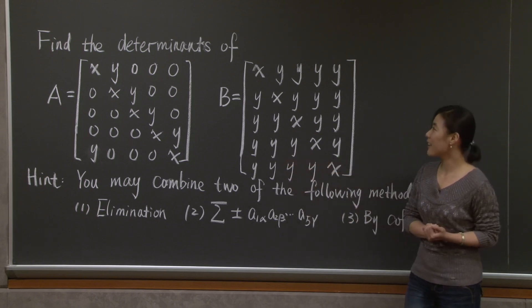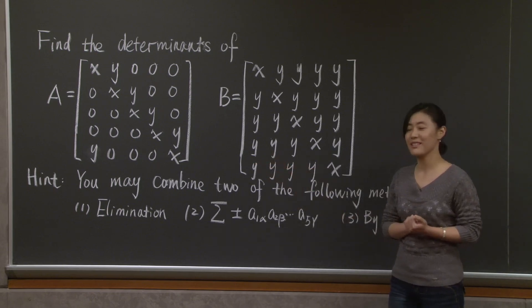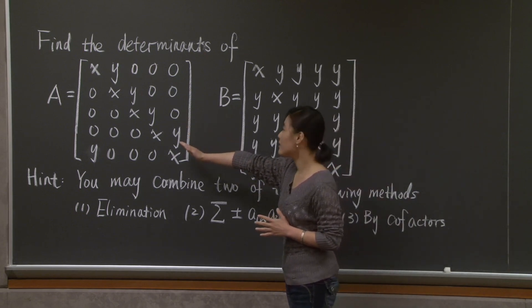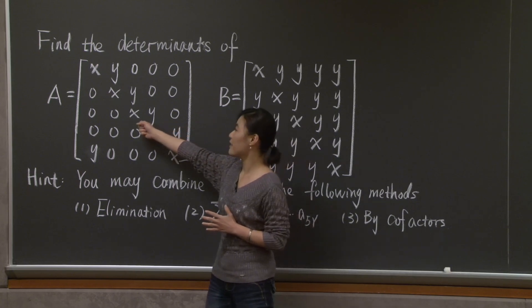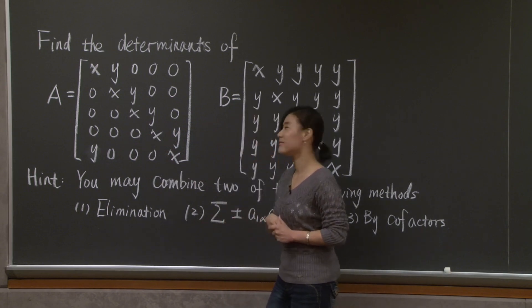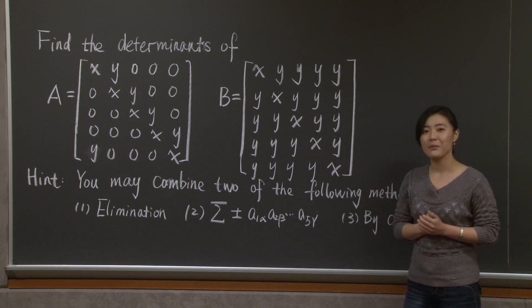So we want to find out the determinants of these two five-by-five matrices. And as you can see, matrix A has x along this diagonal, and in the first four rows, y to the right of x, except for the last row, and zero entries everywhere else. And matrix B also has x along this diagonal, and y everywhere else.